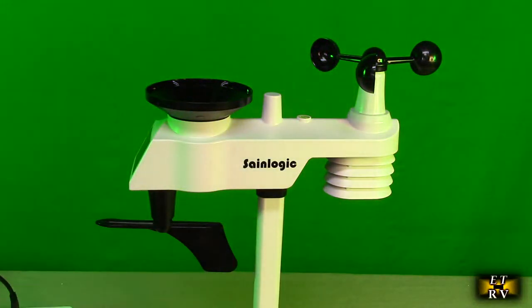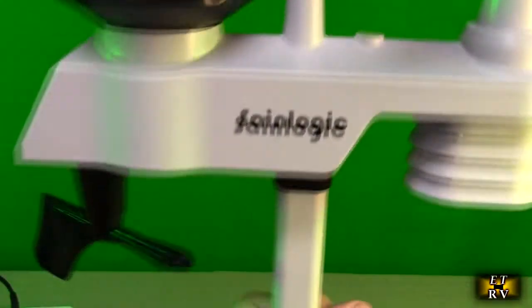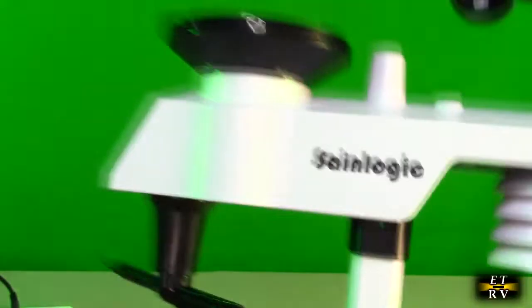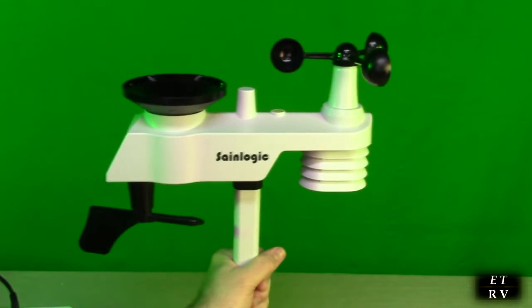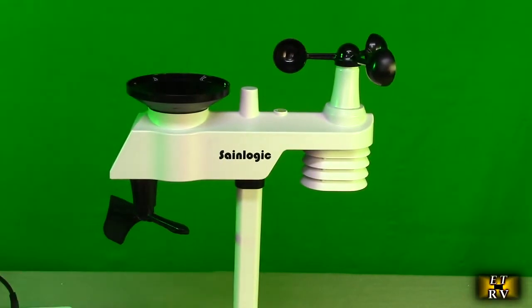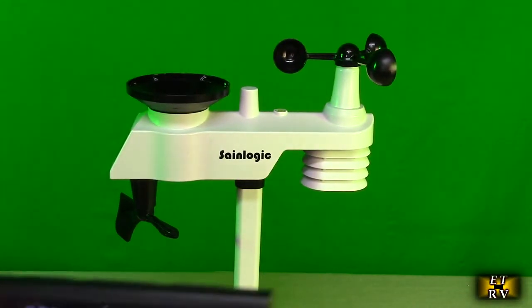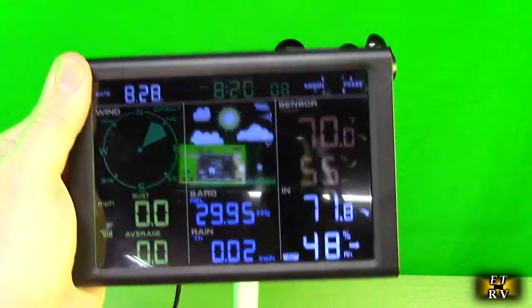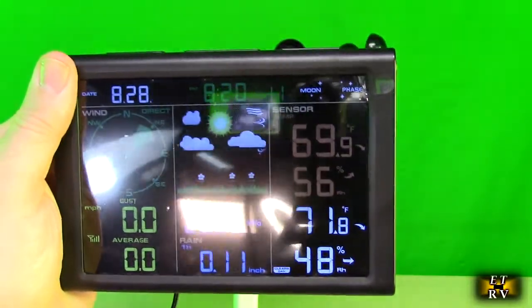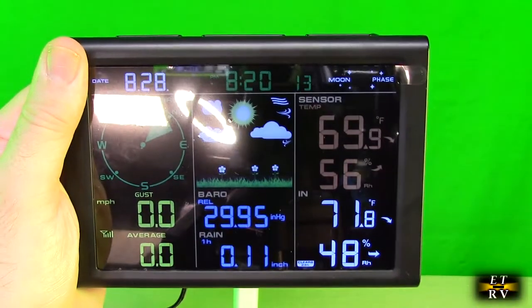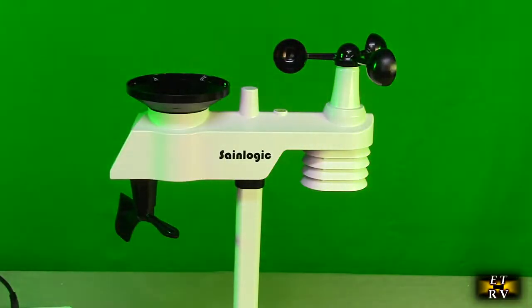Now if you want to test the rain gauge before you install it, you could tip the unit. You hear that click. Every one of those clicks represents a tenth of an inch, I believe. So let's see if the display measured that rainfall, and you can see right there it has 0.2 of an inch, or 0.11 of an inch. So that's telling you that it's measuring rainfall. That's the simple test you can do before you actually install it.